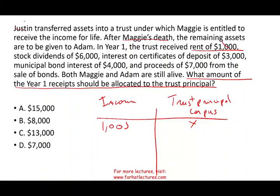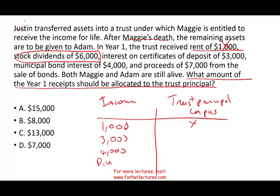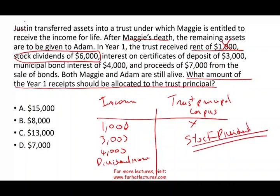Stock dividend — we'll come back to that. Interest on the certificate of deposit goes to income. Municipal interest goes to income — it's not taxable, but it goes there. Now, stock dividend: they received a stock dividend of $6,000. This sounds like dividend income, but no — stock dividend is considered part of the principal, the corpus. Because they're not giving you cash; they added more stocks, so they added more principal. Therefore, stock dividend is part of the corpus. And proceeds of $7,000 from the sale of the bond — is this current income? It's coming from the action of the trustee. Sale of bonds, any capital gains or capital losses, is part of the corpus. Otherwise, if you sell the bond and liquidate, the corpus is gone. So 6 plus 7 equals 13 — the answer is 13.